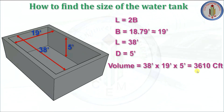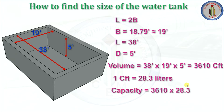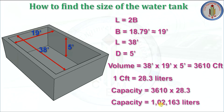The volume with these dimensions is 3610 cubic feet. Since 1 cubic feet holds 28.3 liters, this tank can hold up to 1,02,163 liters. Our required capacity was 1 lakh liters, so the calculated dimensions comfortably satisfy the requirement.